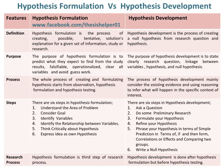There are six steps in Hypothesis Formulation. Step one: understand the area of problem. Step two: consider goal. Step three: identify variables. Step four: identify the relationship between variables. Step five: think critically about the hypothesis. Step six: express the idea as your own hypothesis.